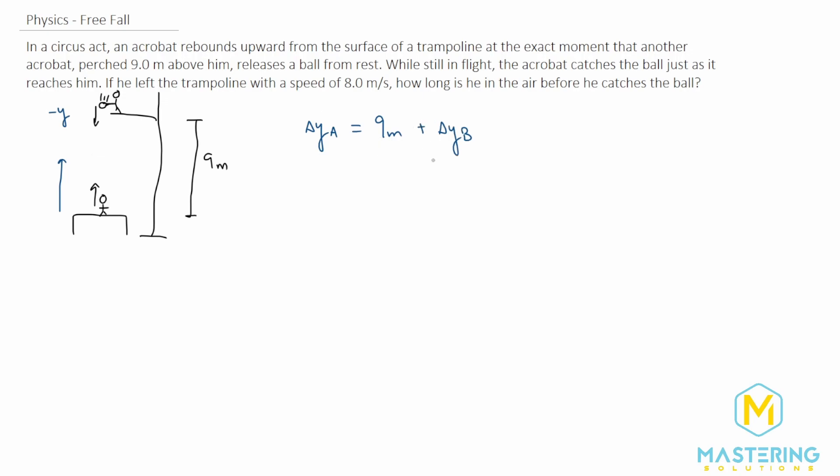Now that we have our equation, we need to figure out what we're going to put in for the delta y's for both. So let's do them separately. We'll say the acrobat and the ball. For the acrobat, we're going to use a kinematic equation, and we're going to be using the one that is y_final equals y_initial